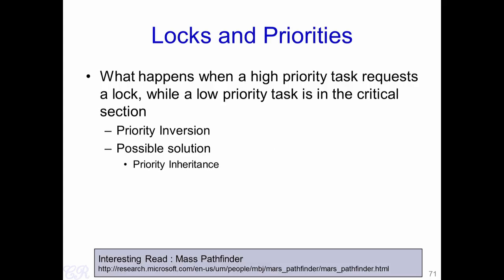When talking about synchronization primitives such as spin locks and mutexes, it is important to also consider the case when a priority-based scheduling algorithm is used in the operating system. Consider this scenario: we have a high priority task and a low priority task which share the same data and have a critical section. The low priority task is executing in the critical section, and at this point the high priority task requests the lock in order to enter the critical section. The dilemma is that we have a high priority task waiting for a low priority task to complete — this is known as the priority inversion problem.